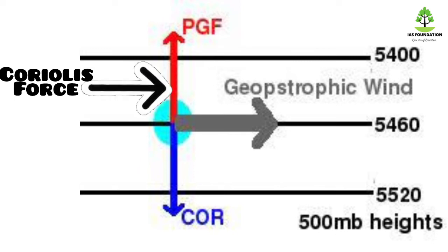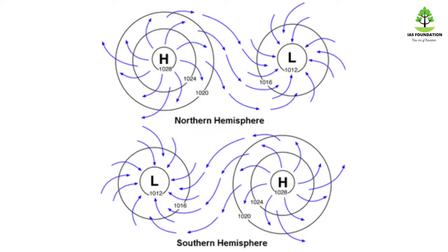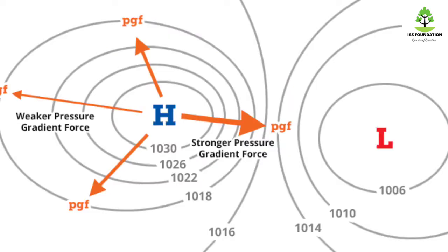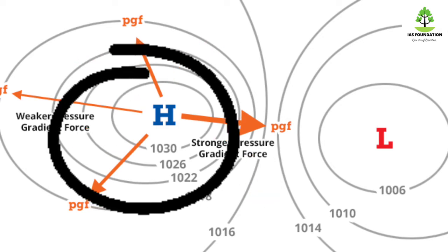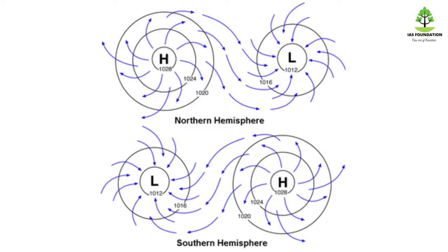The pressure gradient force and Coriolis force work together. In the north hemisphere, the wind deflects to the right side. The low pressure area in the northern hemisphere rotates in an anti-clockwise direction for a cyclone. The high pressure area forms an anti-cyclone. In the south hemisphere, the low pressure area wind deflects to the left side.